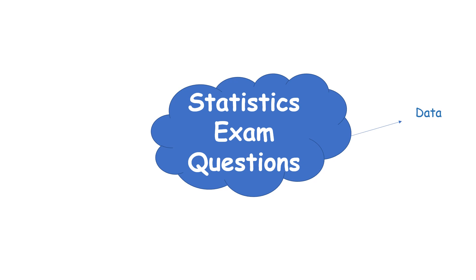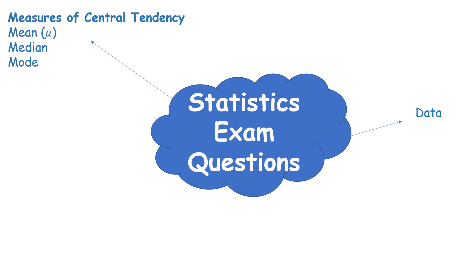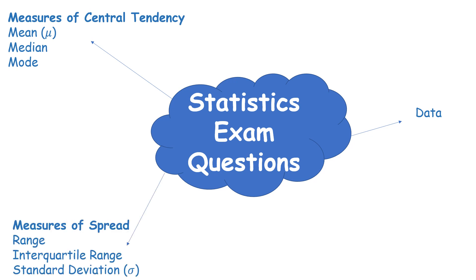As part of these statistics exam questions, you'll need to understand what data means. You'll need to understand your measures of central tendency — that's mean, which has the symbol mu as well as x-bar. We also have median and mode. We have measures of spread: range, interquartile range, and standard deviation, which is given by sigma.